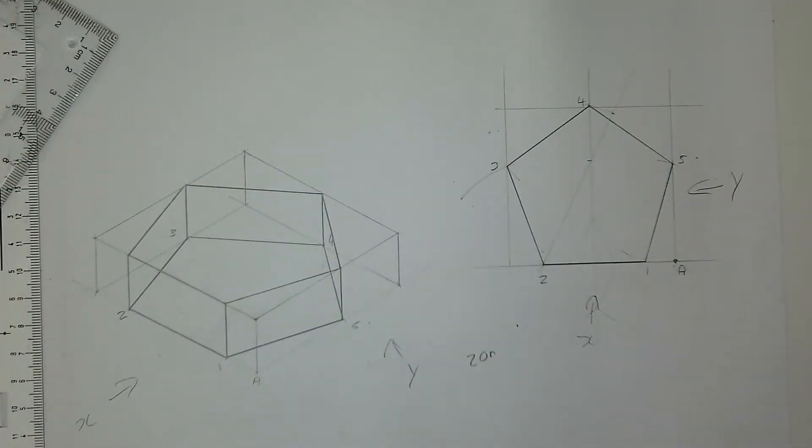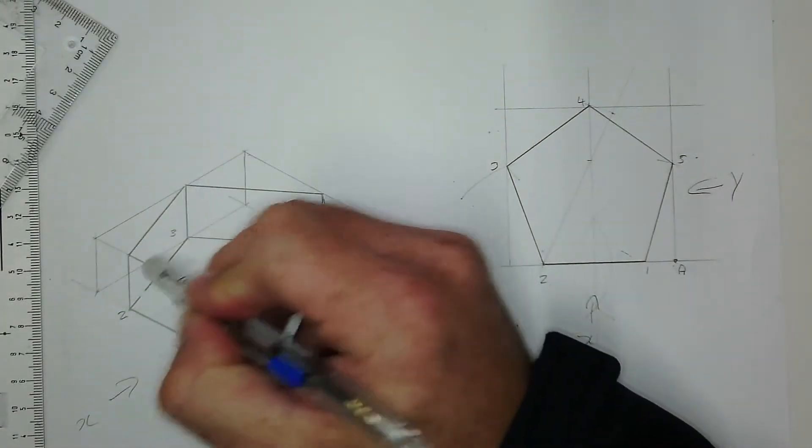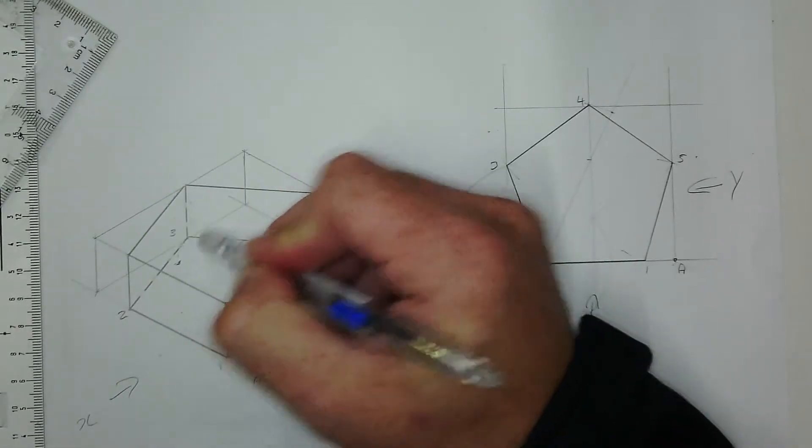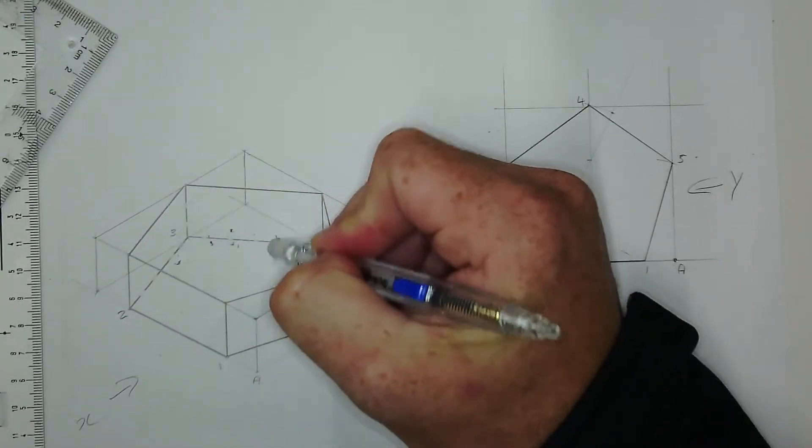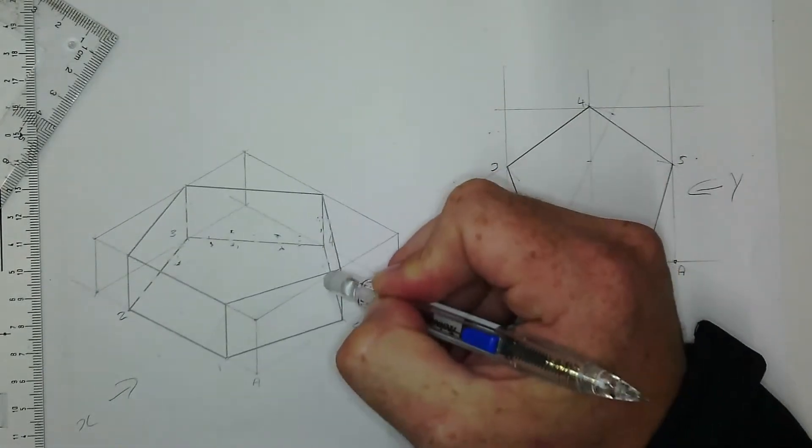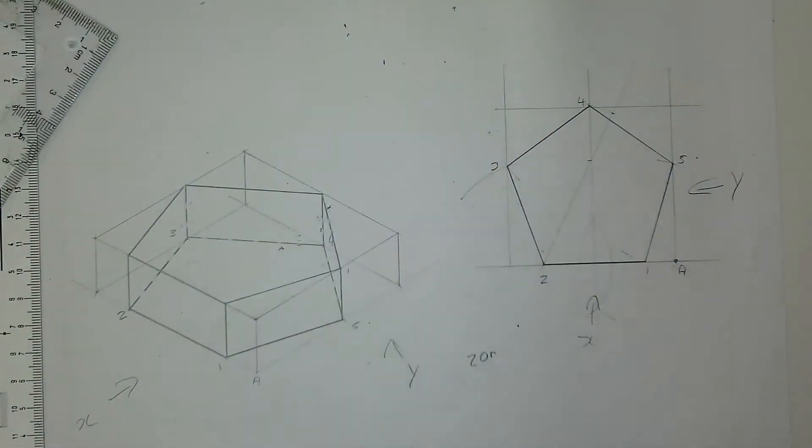Now if I rub out some of the lines to indicate that it is a hidden detail, something that I cannot see, the drawing should make more sense.